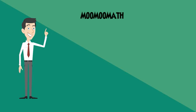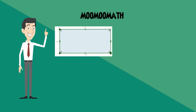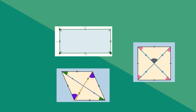Hello, welcome to MooMoo Math. In this video I'd like to talk about rectangles, rhombuses, and squares. Each of these are plane two-dimensional shapes. Let's look at some of the properties of each of these shapes.